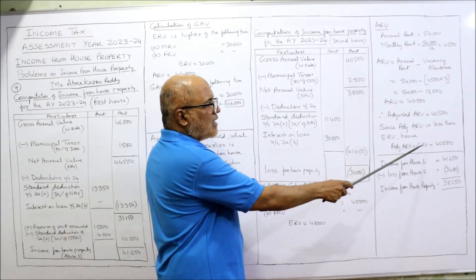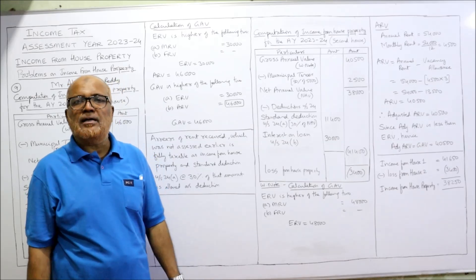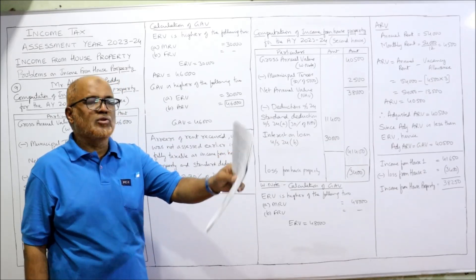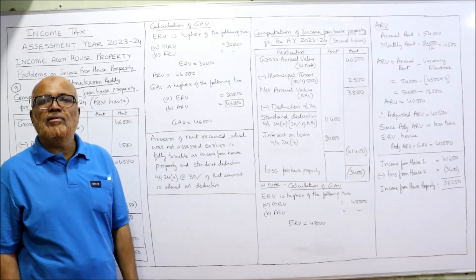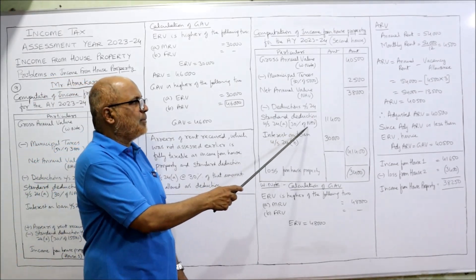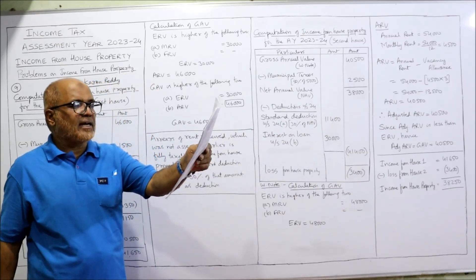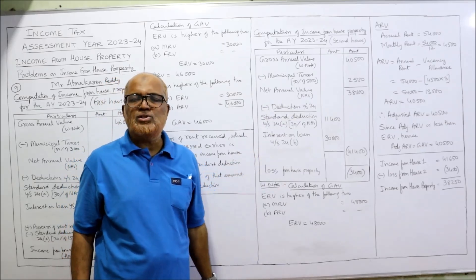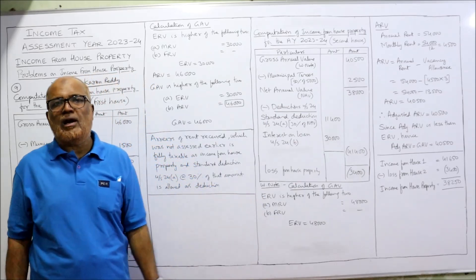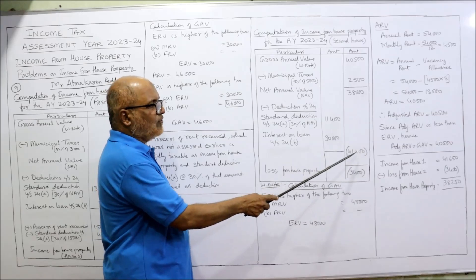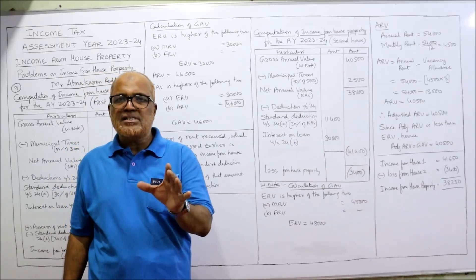GAV is 40,500. Deduct municipal taxes: 50% of 5,000 = 2,500. NAV = 38,000. Standard deduction at 30% of 38,000 = 11,400. Interest on loan for the second house is 30,000 total; though only 10,000 was paid, the total interest whether paid or not is fully allowed as deduction under Section 24b. Total deductions = 41,400. Loss from house property on the second house = 3,400.